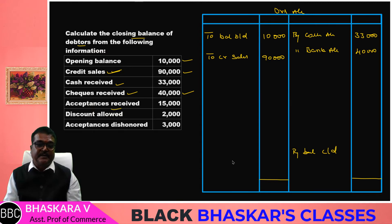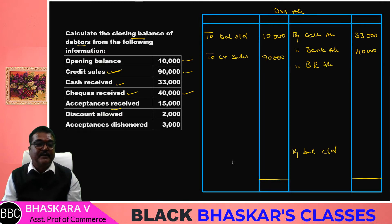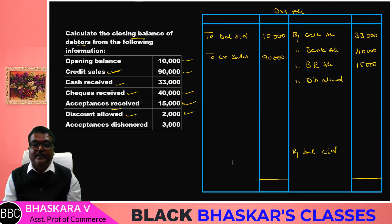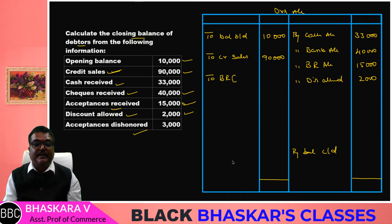Acceptance received from debtors — Bills Receivable received from debtors, By BR account: 15,000. Next, Discount Allowed: 2,000 — By Discount Allowed account. Next, BR Dishonored — Dishonored, Debit To BR Account: 3,000. This detail is explained, you will find it in the format of the debtors account.